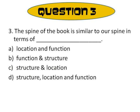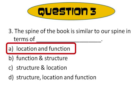Question 3: The spine of a book is similar to our spine in terms of A. location and function, B. function and structure, C. structure and location, or D. structure, location and function. The answer is A, location and function. The spine of the book holds the pages together, and so does our spine because it holds our bones together — hence they are similar in function. If you look at the location of the spine of a book, it is similar to the location of where the spine is on our body.